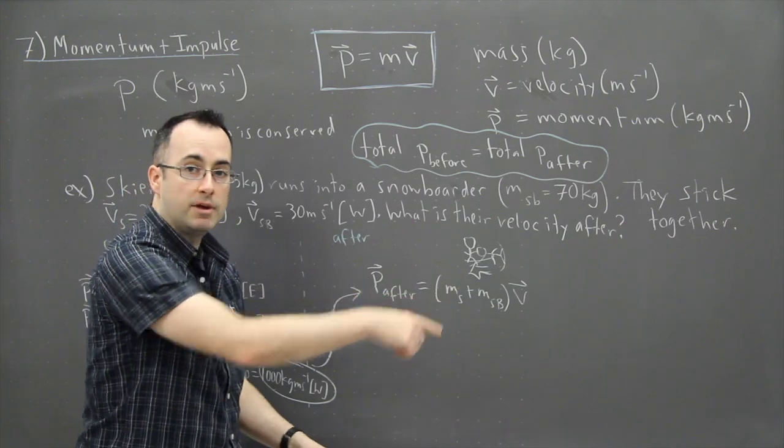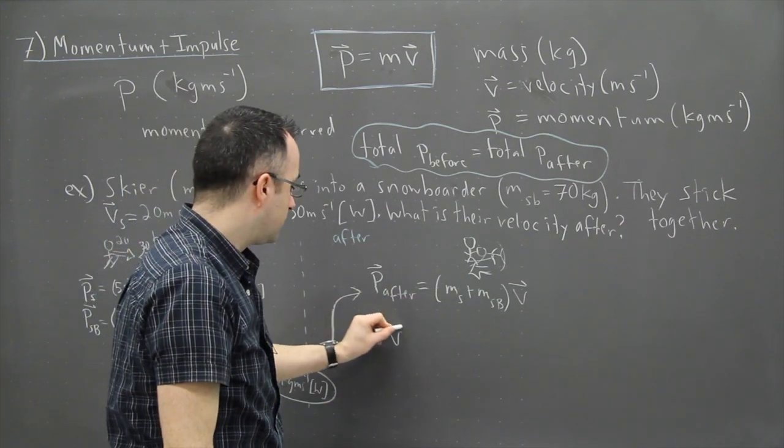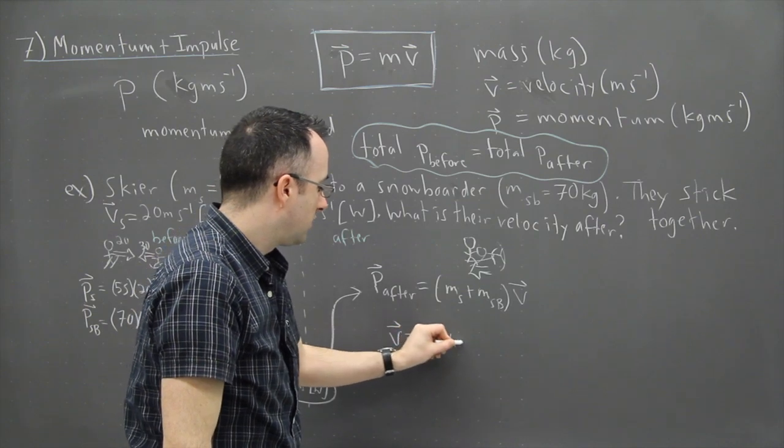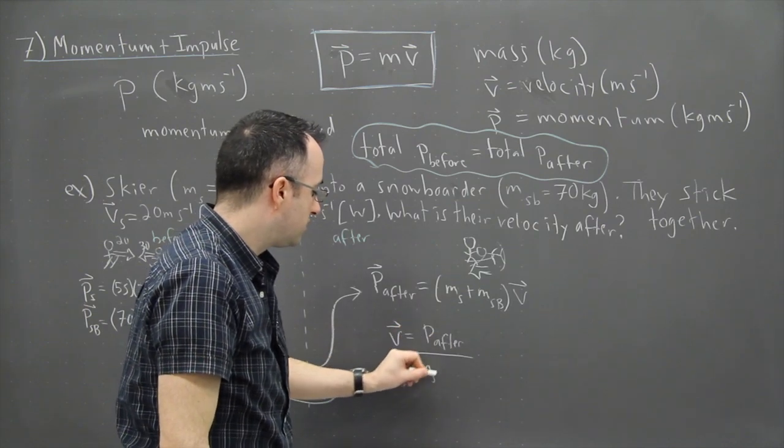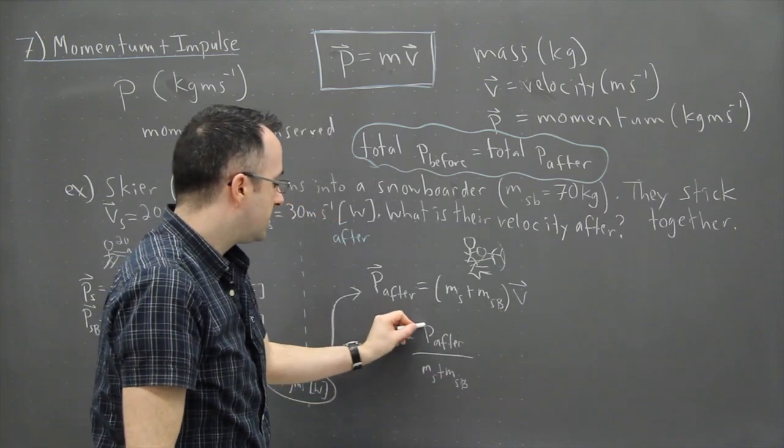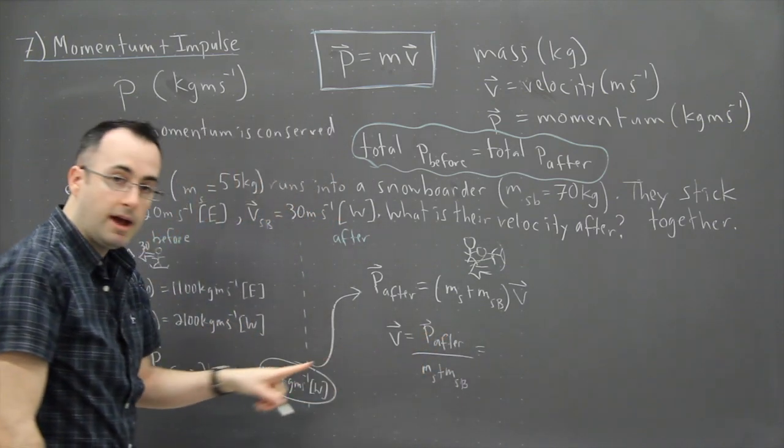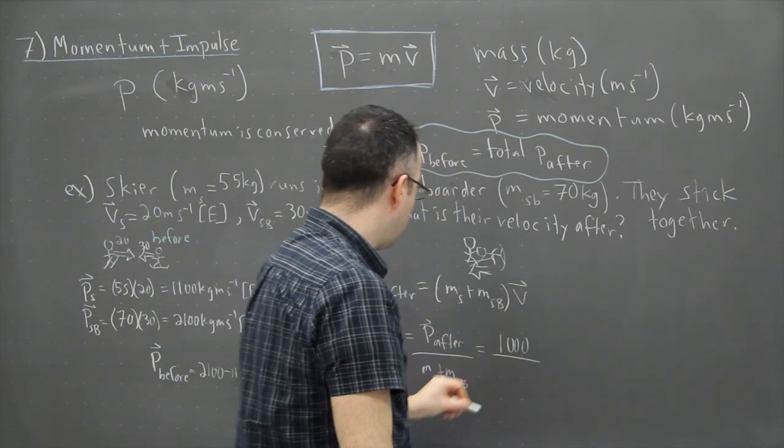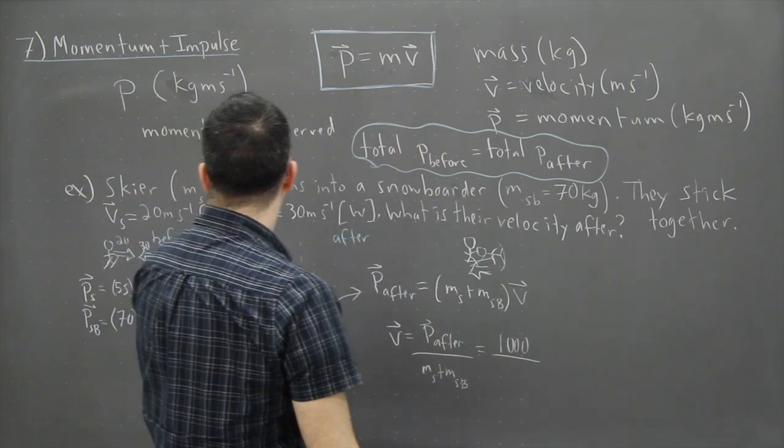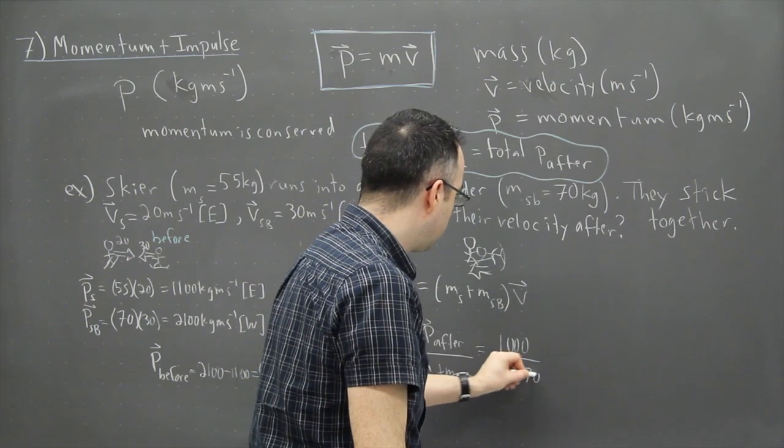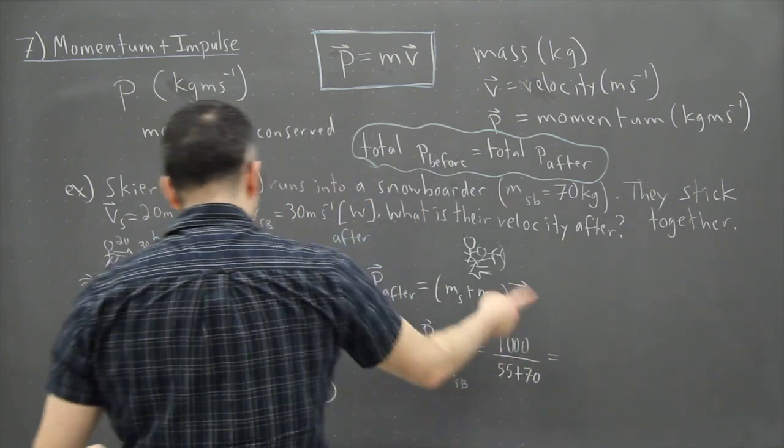So if we look at this then, now we can actually solve for the velocity of both of them. It's just going to be P after, divide that by mass of snowboarder plus mass of skier. Well in this case, I already know P after. P after is a thousand. So then I have a thousand divided by, I have 55 plus 70. Keep in mind that's going to be all west.